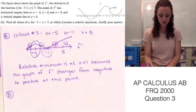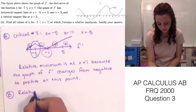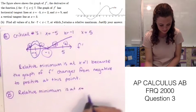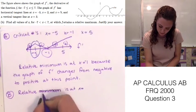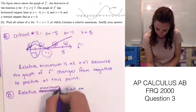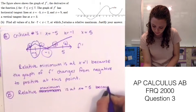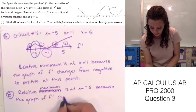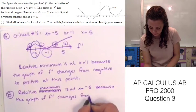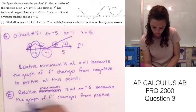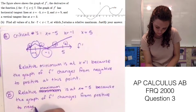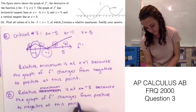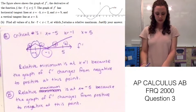So our reasoning is that the relative maximum is at x equals negative 5, because the graph of f prime changes from positive to negative at that point. That's how you find Part B — pretty simple once you've done Part A.